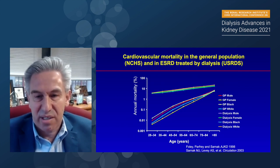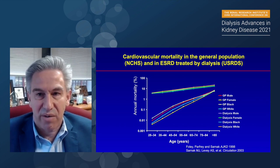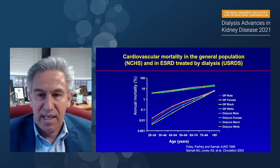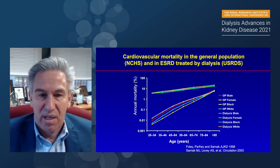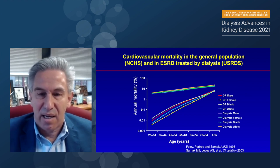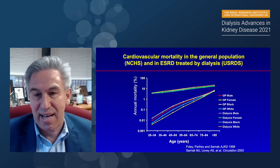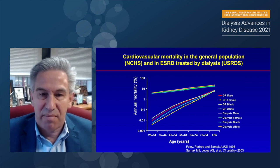When you look at dialysis patients, this is data from more than 20 years ago looking at cardiovascular mortality in the general population compared to those treated by dialysis. The whole top part of the curve is dialysis patients, and on the y-axis you've got annual mortality on a log scale due to cardiovascular mortality. At ages 25 to 34, there's approximately a 500-fold increased mortality due to cardiovascular disease if you're a dialysis patient, regardless of whether you're black, white, male, or female. Even in those greater than age 85, there's a three-fold higher risk. A dialysis patient aged 25 to 34 has an equivalent risk to a general population patient at about 85 years of age — just tremendous cardiovascular mortality in patients with kidney failure.